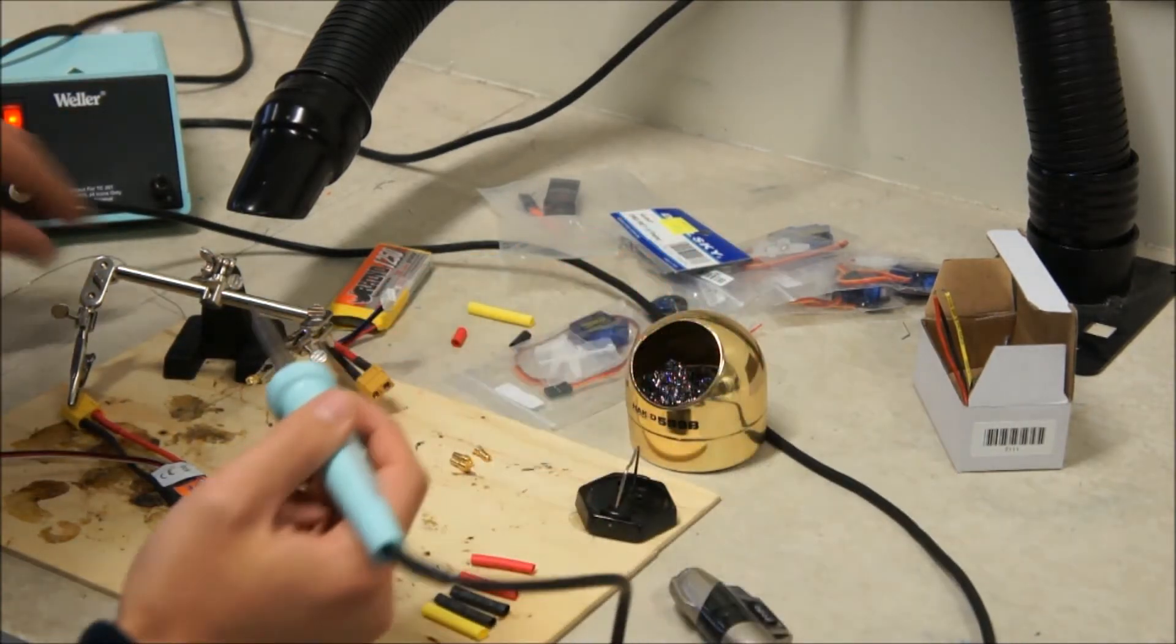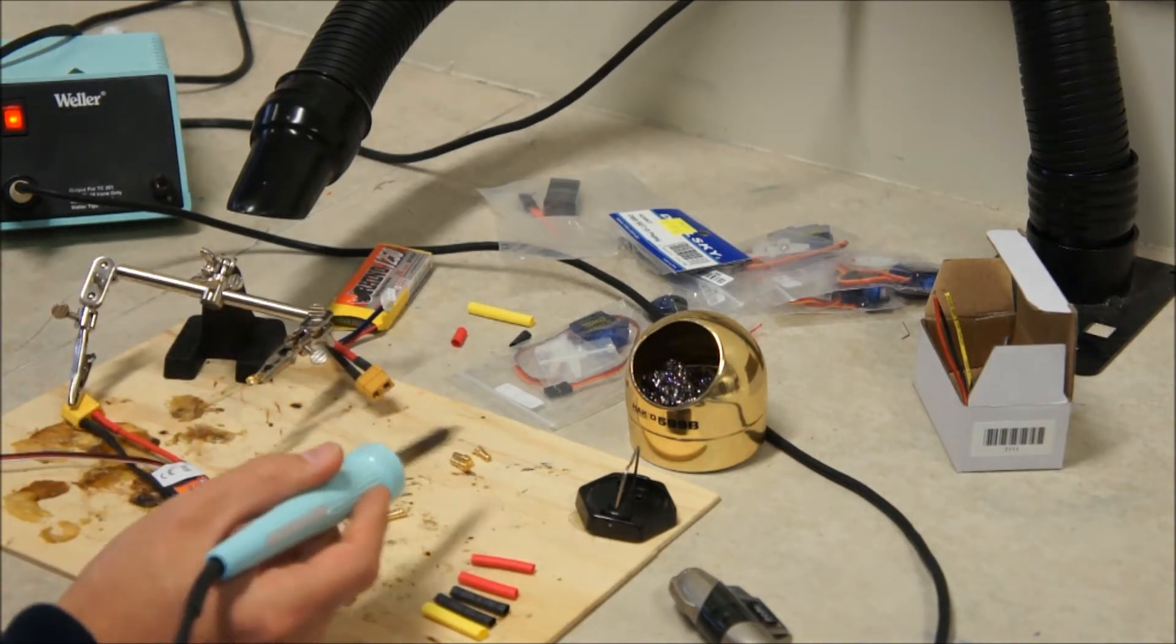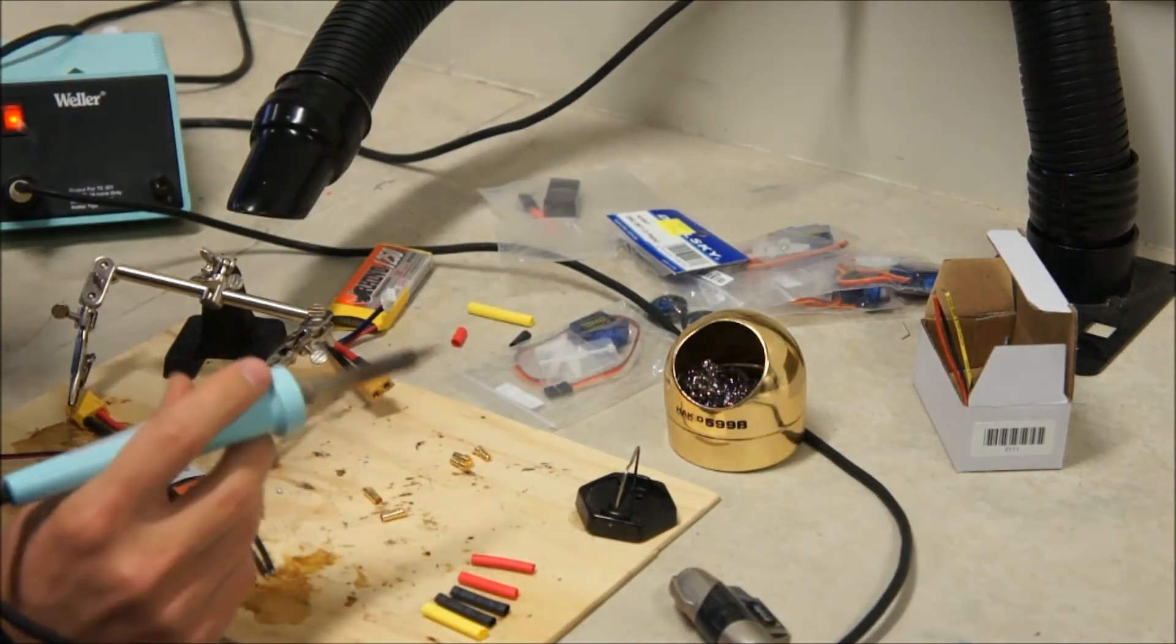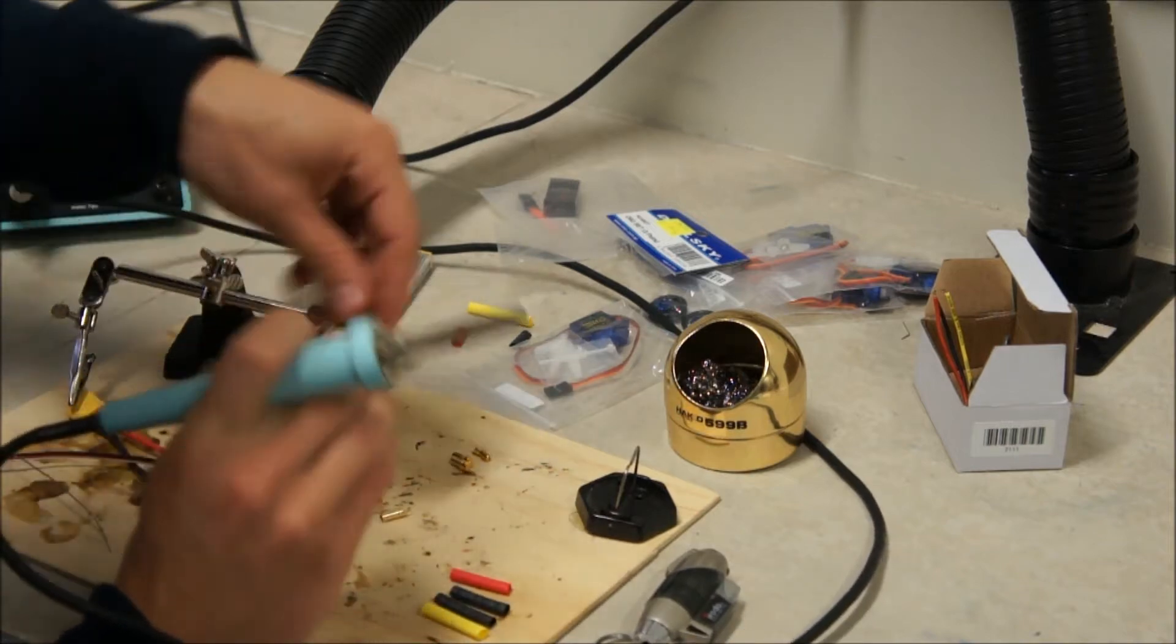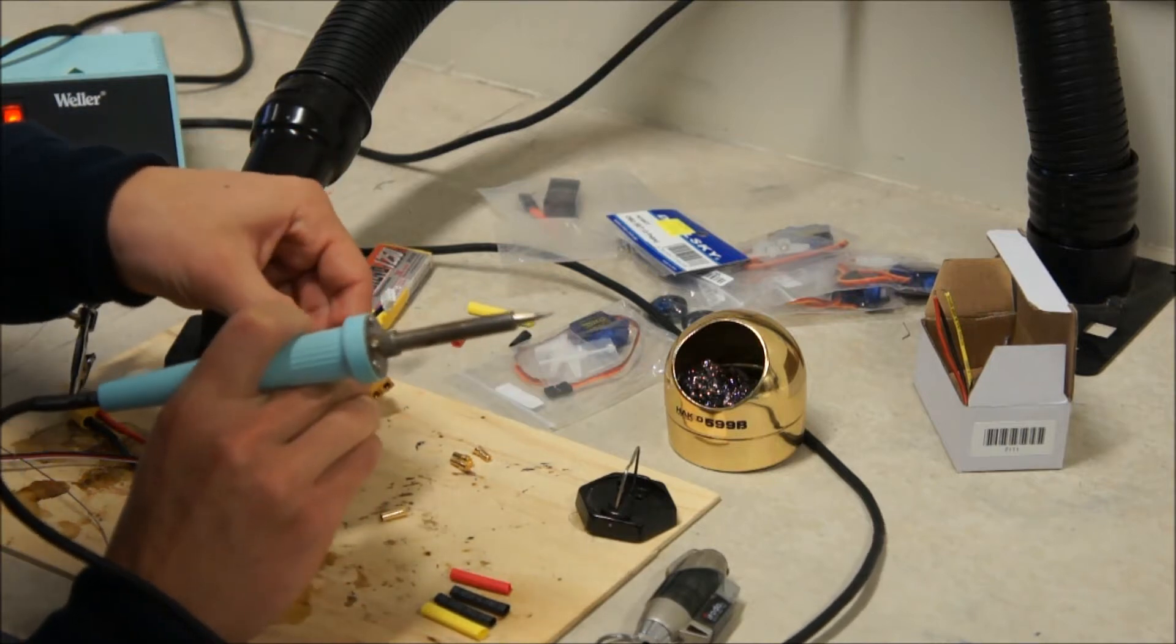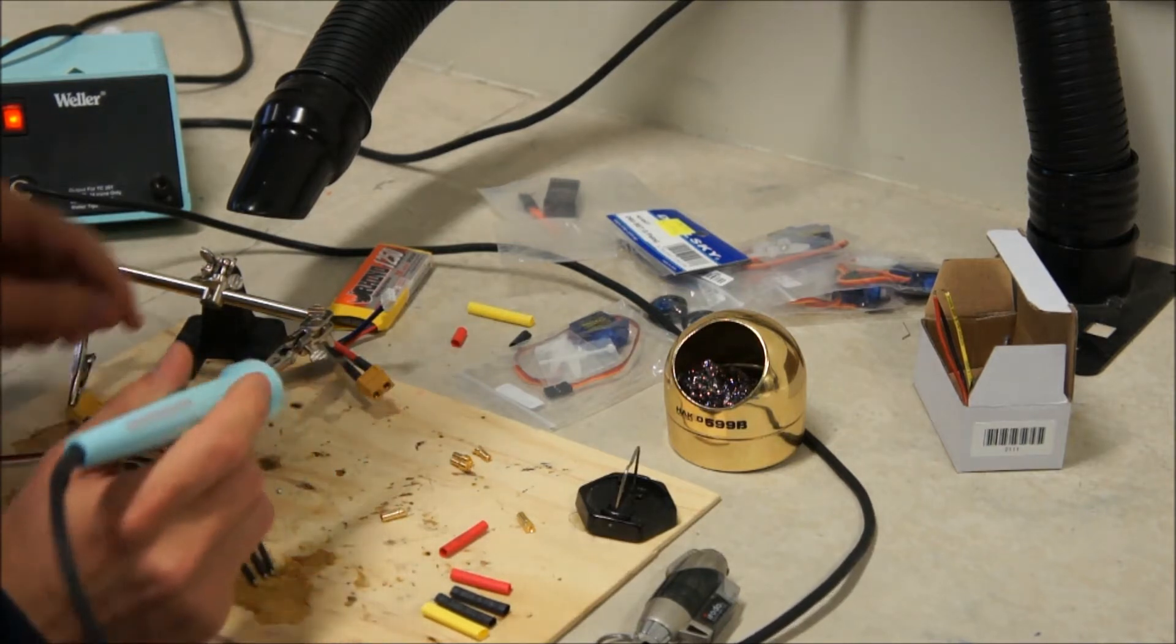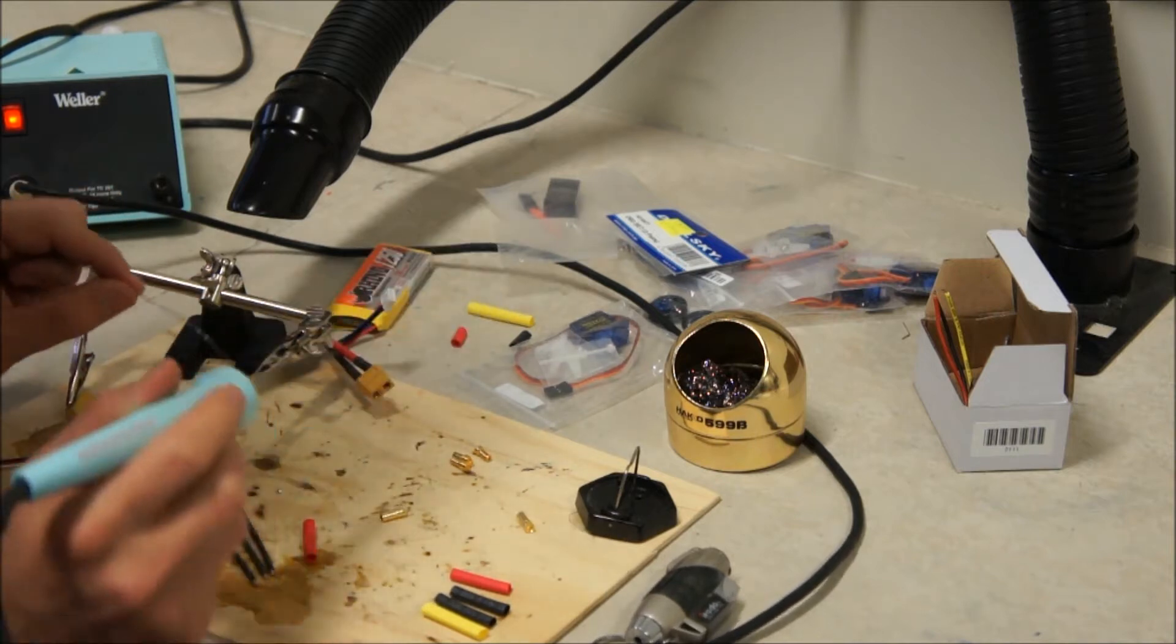So again, with a nice, clean tip on the soldering iron, turn on my extractor again. These pieces of heat shrink are going to be able to slip over the bullet connector afterwards. So I wouldn't worry too much about getting the heat shrink on first. Otherwise you could just put the red, yellow and black heat shrink on and then we'll match up the motor later on.